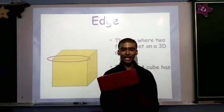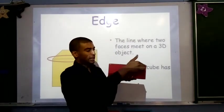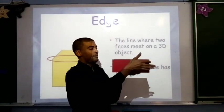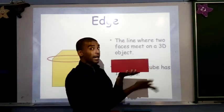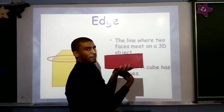So, if we take our 3D shape, and we look at how many edges it has, we've got, starting at the top, 1, 2, 3, 4, going down, 5, 6, 7, 8, and at the bottom, 9, 10, 11, and at the back, 12.